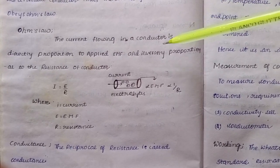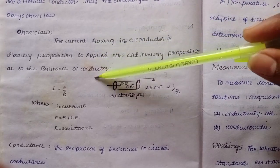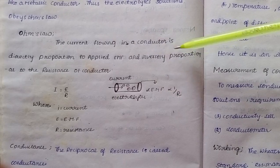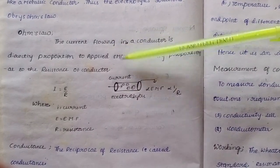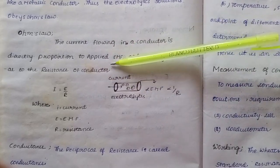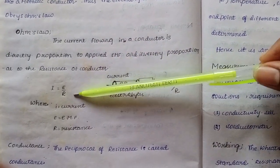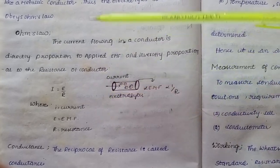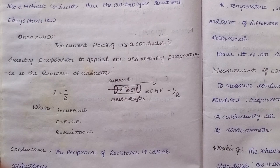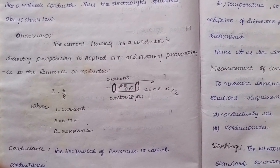The current flowing in a conductor is directly proportional to the applied EMF and inversely proportional to the resistance of the conductor. This is Ohm's law: I = E / R. The current flow is due to the mobility of cations and anions present in the electrolyte.